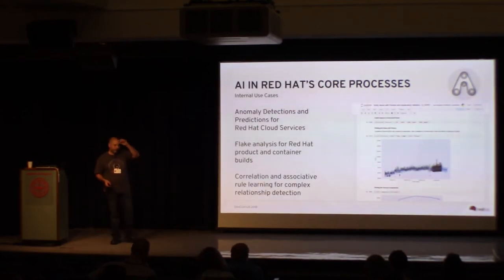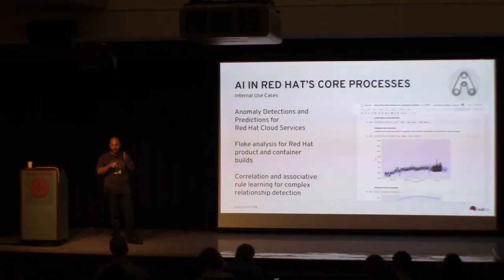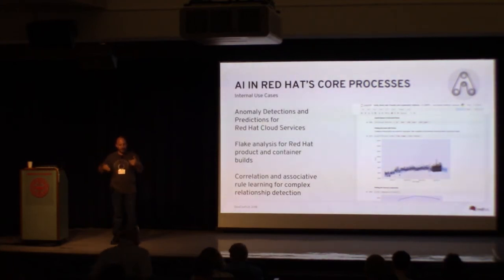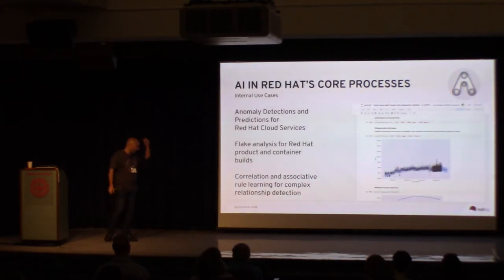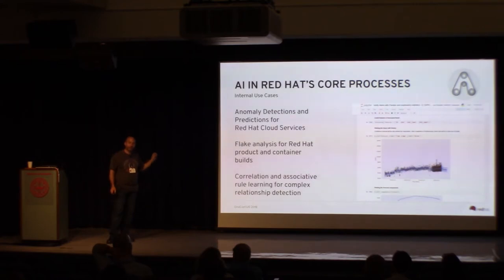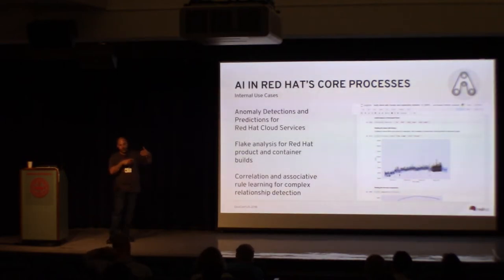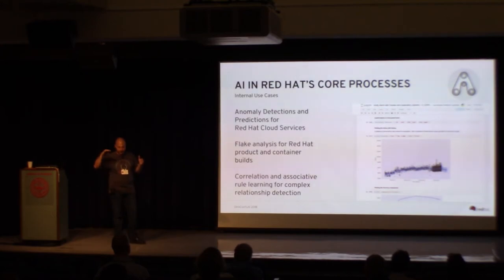Flake analysis — the complexity of these systems is so high that it's hard for humans to understand the complex chain of why something happened, or even recognize that two failures are related because the relationship is deep in some condition that both share but is not obvious. A computer can find these things because it can shift through all the data. We're also doing associative rule learning — for humans who write rules, we're helping them visualize relationships between things and giving them rule examples so they can more efficiently derive knowledge and derive rules.